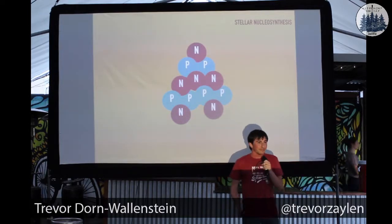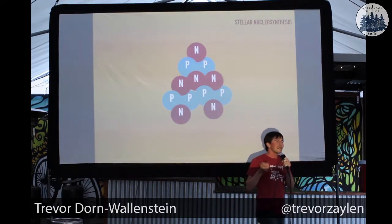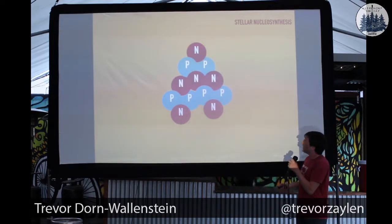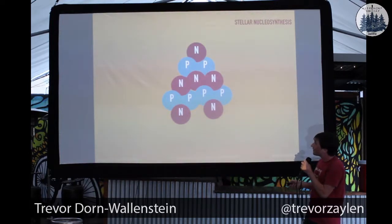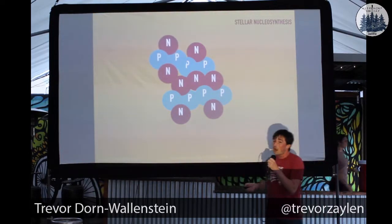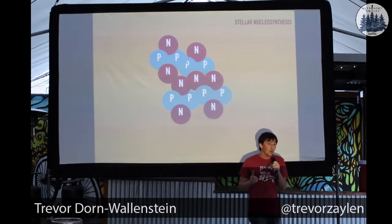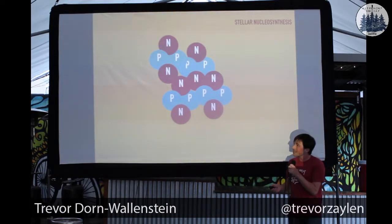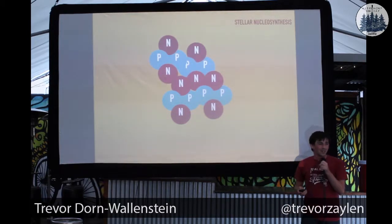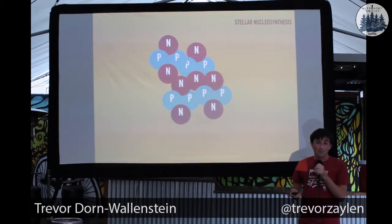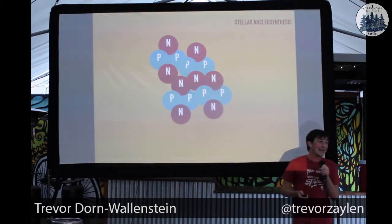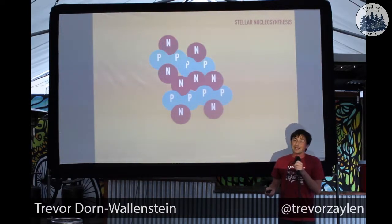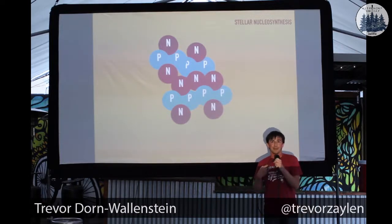Now that we've made our carbon — let's say the star is about two times the mass of our sun — in addition to carbon, this star can also make oxygen by adding one more alpha particle, one more helium nucleus. And now we have oxygen. Unfortunately, this is about as far as a low mass star can get. They can make carbon, they can make oxygen — that's about it. Low mass stars are boring.